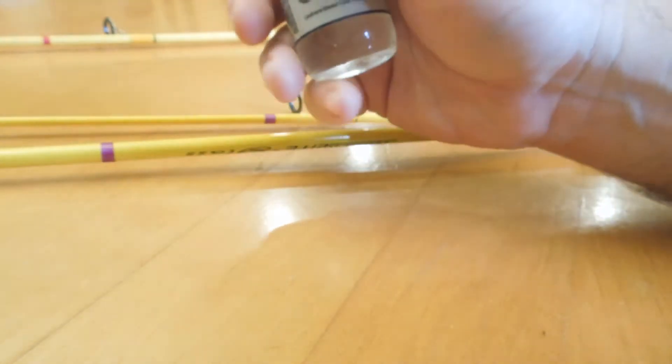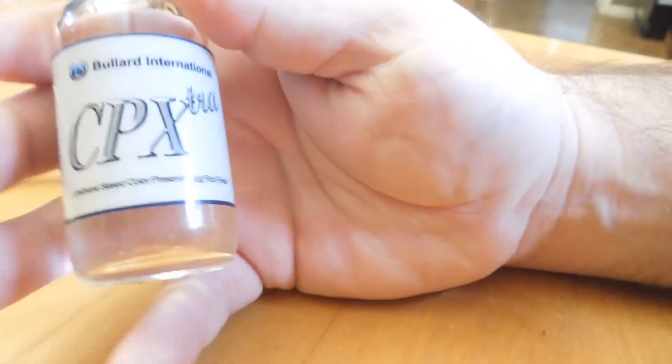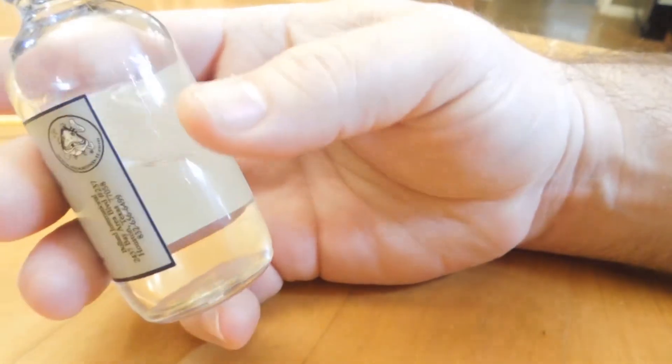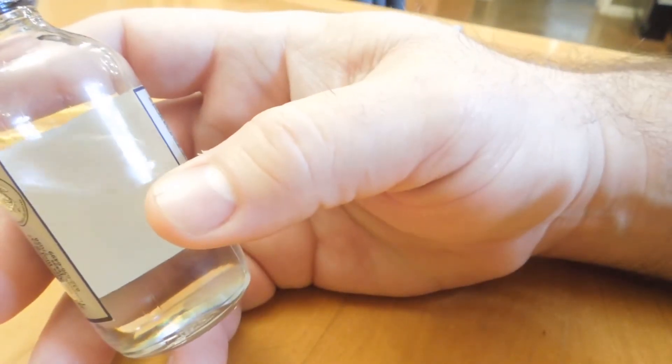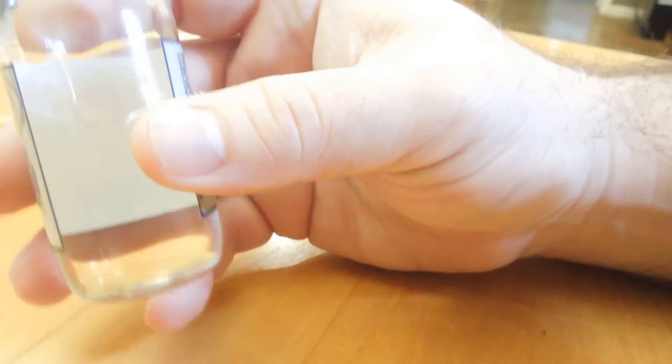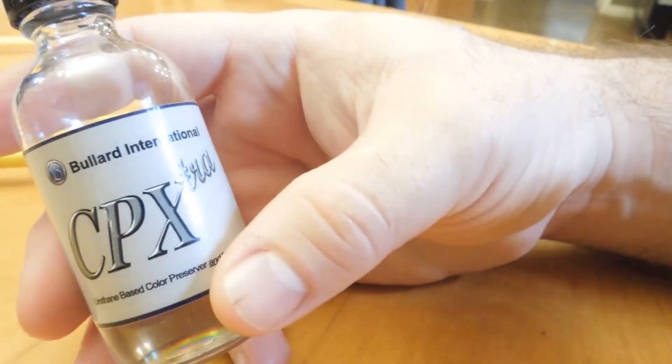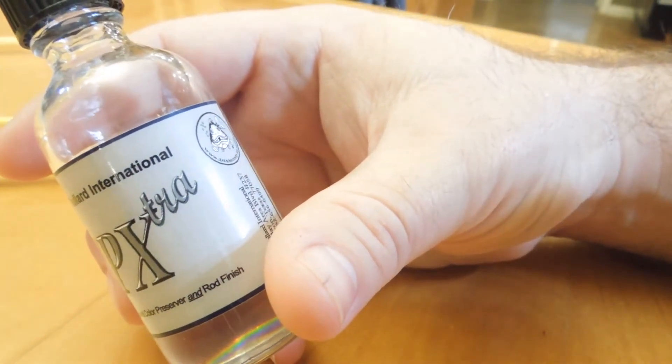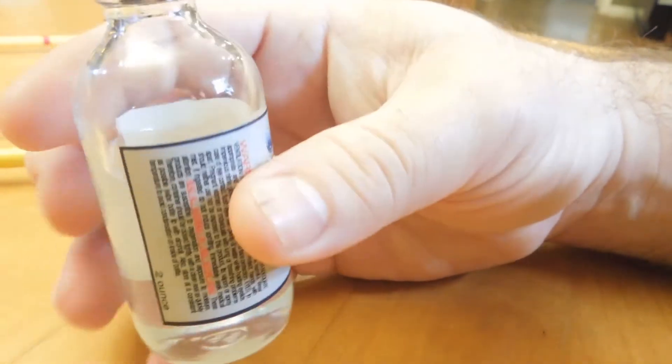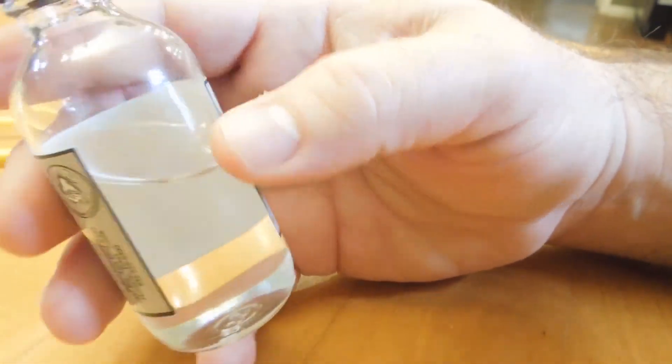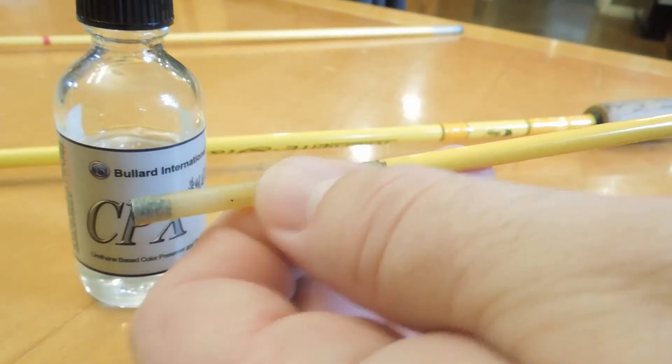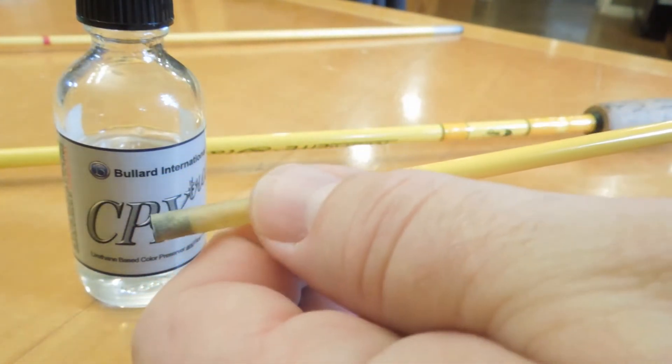A really good fix for loose-fitting ferrules is to use a product like this CP extra made by Bullard International. What it is is a rod finish. It's thinner than water actually because there's no surface tension or anything on it. What this is is a pre-catalyzed one-part urethane and it's super hard. Once it's fully cured, you're not gonna have a whole lot of wear to it over time. What you're gonna want to do is put this on the male end of your ferrule in a very, very thin coat.